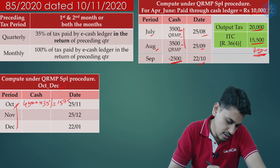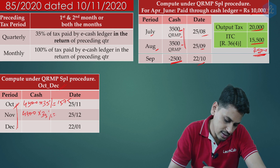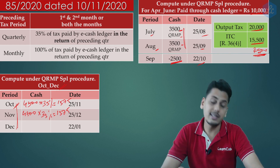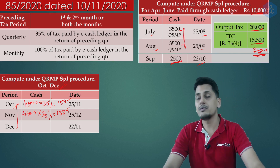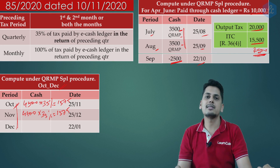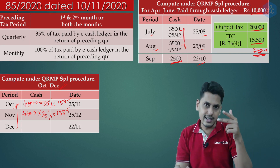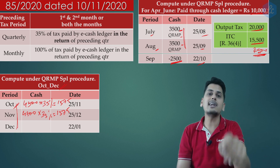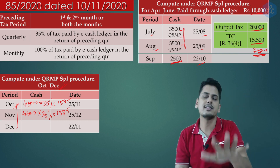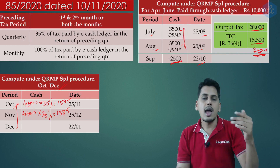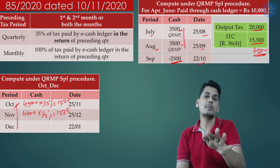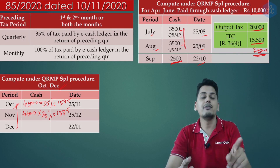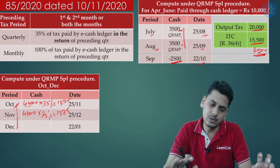Therefore, 4,500 × 35% = 1,575. This is the amount to be paid for October. For November, the same: 4,500 × 35% = 1,575 to be deposited in the electronic cash ledger. The key point: for the first and second month under the QRMP special procedure, the amount required to be deposited is either 35% or 100% as the case may be — 35% if the preceding tax period was quarterly, 100% if monthly — of the amount debited from your electronic cash ledger, not the amount deposited.